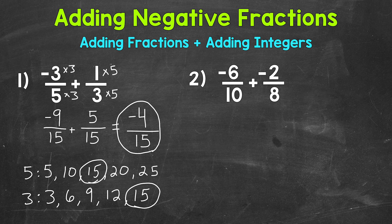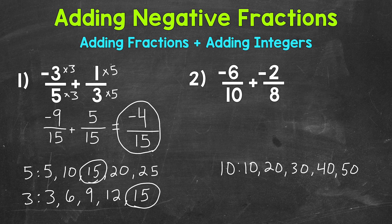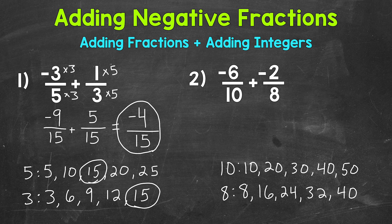Let's move on to number 2, where we have negative 6 tenths plus negative 2 eighths. The first thing we need to do is find a common denominator — the least common multiple between 10 and 8. Multiples of 10: 10, 20, 30, 40, 50. Multiples of 8: 8, 16, 24, 32, 40. So 40 is a common multiple, and that happens to be the least common multiple, making it our least common denominator.